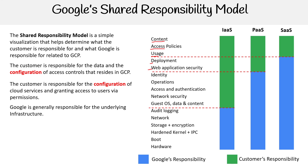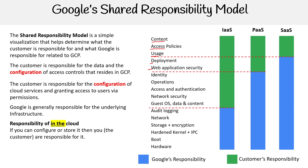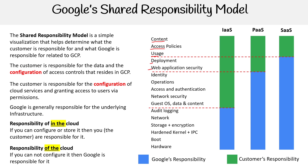Notice I keep using the word 'configuration' — highlighted in red to help you remember: if you can configure it, you're responsible for it. Google is generally responsible for the underlying infrastructure, the hardware. The idea — borrowed from AWS — is 'in the cloud' versus 'of the cloud.' In the cloud refers to you, the customer: if you can configure or store it, you are responsible for it. Of the cloud means if you cannot configure it, then Google is generally the one that is responsible for it.